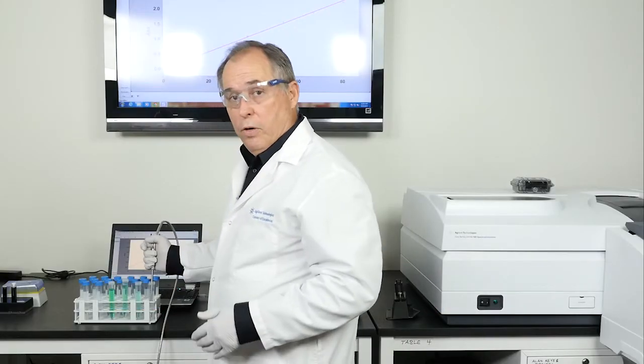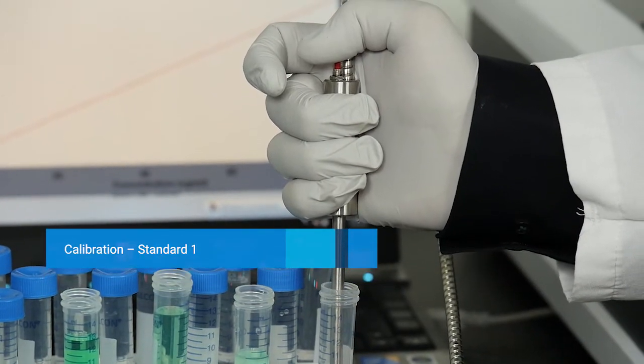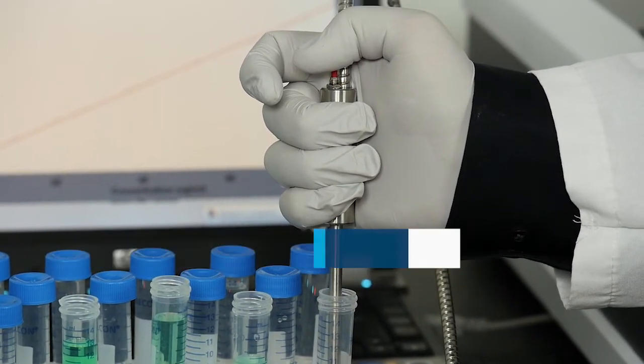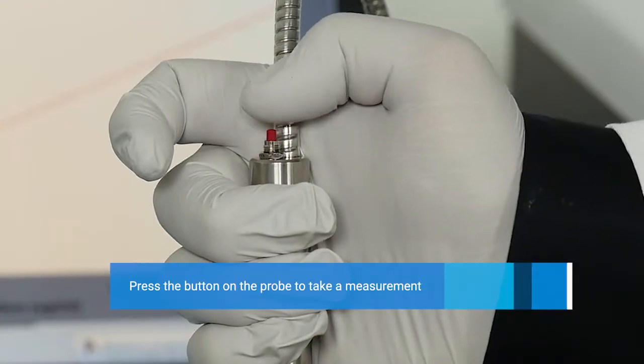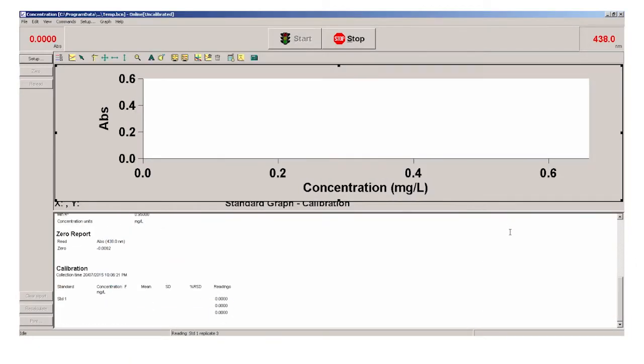So now we're going to construct a calibration curve to show how easy it is. I place the probe inside the vessel. I have to make sure that I cover the full path length, which I do. Now all you have to do is just click the trigger and the measurement is made.